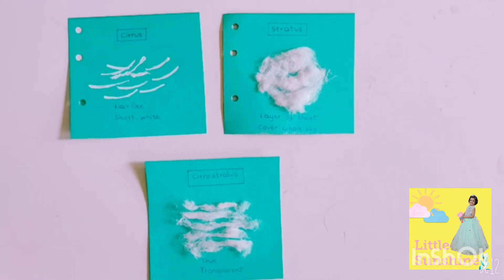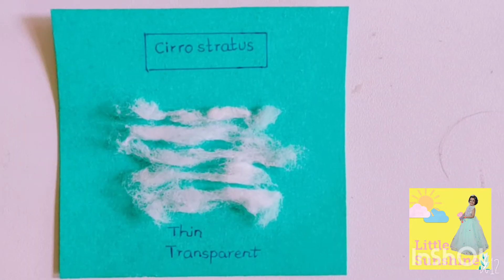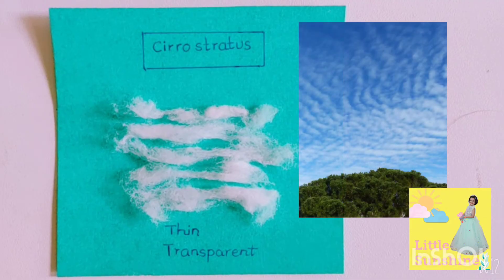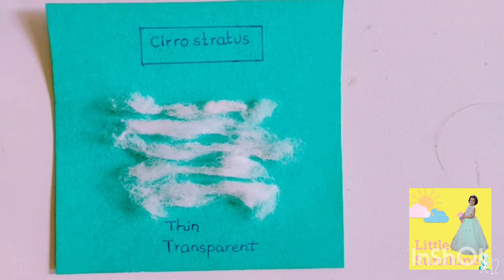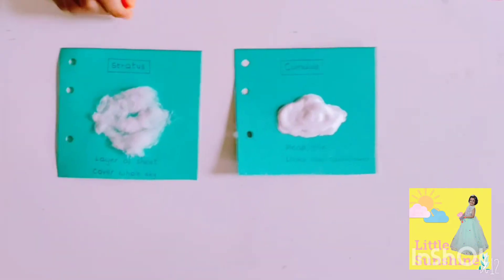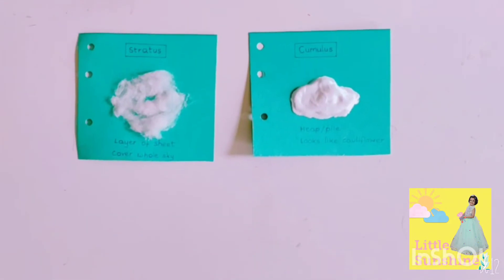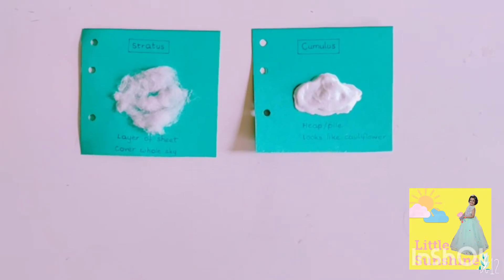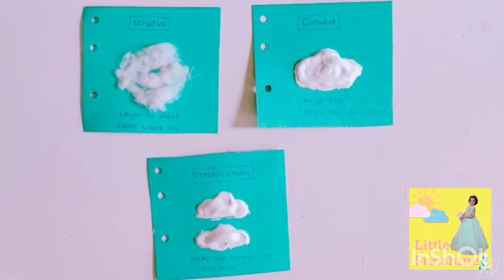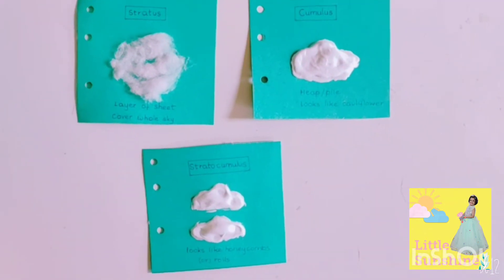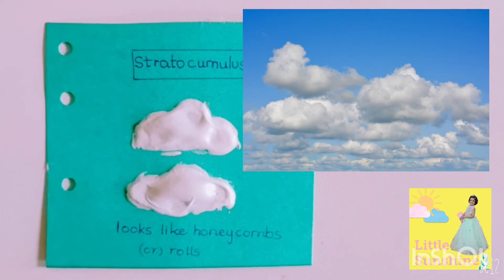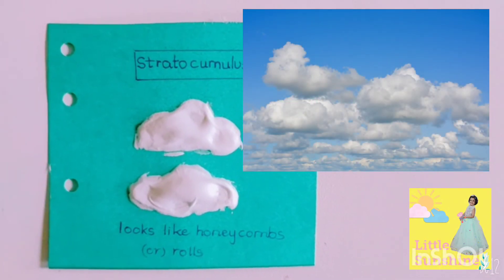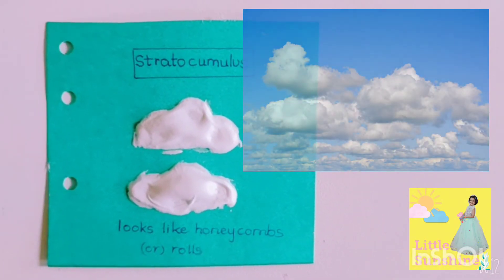Cirrus and Stratus form Cirrostratus. These are thin and transparent. Stratus and Cumulus form Stratocumulus. They look like rolls and honeycombs.